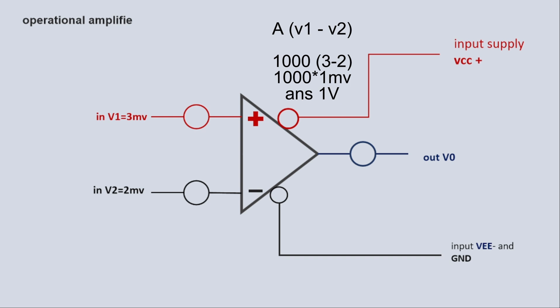You can also understand it by Google. This is enough to understand. This amplifier will amplify it 1000 times. So amplifying 1 millivolt 1000 times will give you 1 volt. I hope you understand.